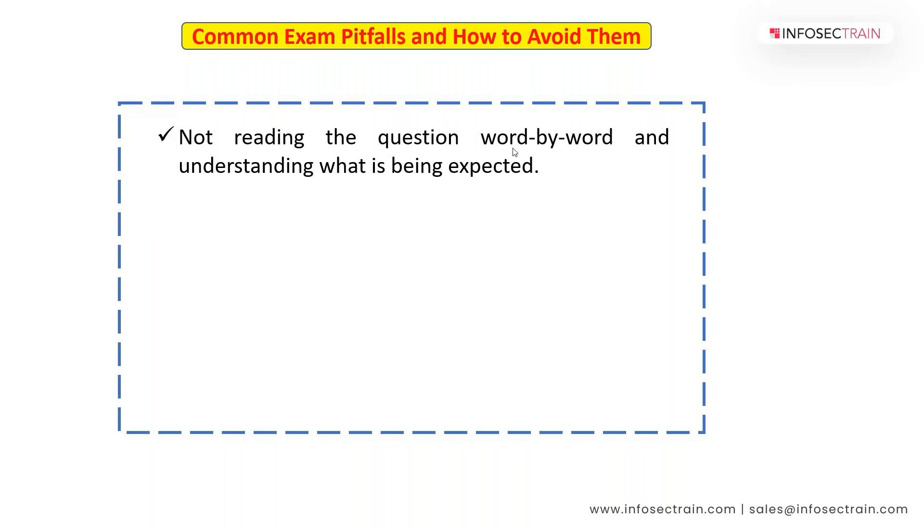For example, Domain One is Information System Auditing Process. It's divided into Part A and Part B. Each domain is divided into two parts. For CISA there are five domains, and each part is divided into Part A and Part B. When you get the question, you have to read word-by-word.